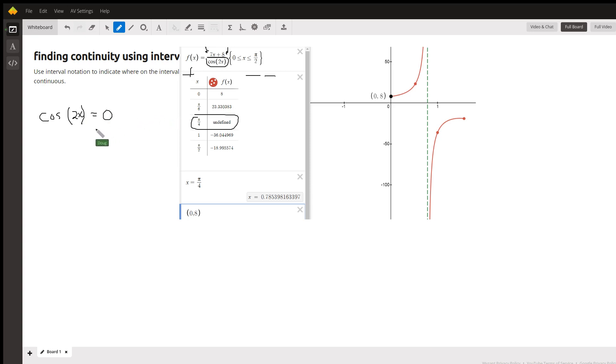When you solve that equation for x's that give you a value in the interval from zero to π over 2, you'll find out where the function is not continuous.